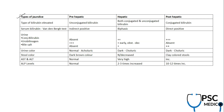In pre-hepatic or hemolytic jaundice, the unconjugated or indirect bilirubin fraction is elevated. In post-hepatic or obstructive jaundice, conjugated bilirubin levels are elevated. In hepatic jaundice, as this case suggests, there is elevation of both direct and indirect fractions.